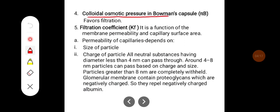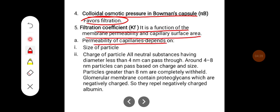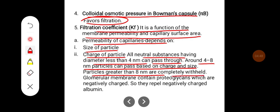Oncotic pressure in Bowman's capsule favors filtration. The filtration coefficient is a function of membrane permeability and capillary surface area. Permeability depends on the size and charge of the particle. All neutral substances with a diameter less than 4 nanometers can pass through freely; particles of 4 to 8 nanometers can pass based on charge and size; particles greater than 8 nanometers are completely withheld. The glomerular membrane contains negatively charged proteoglycans, which repel negatively charged albumin.